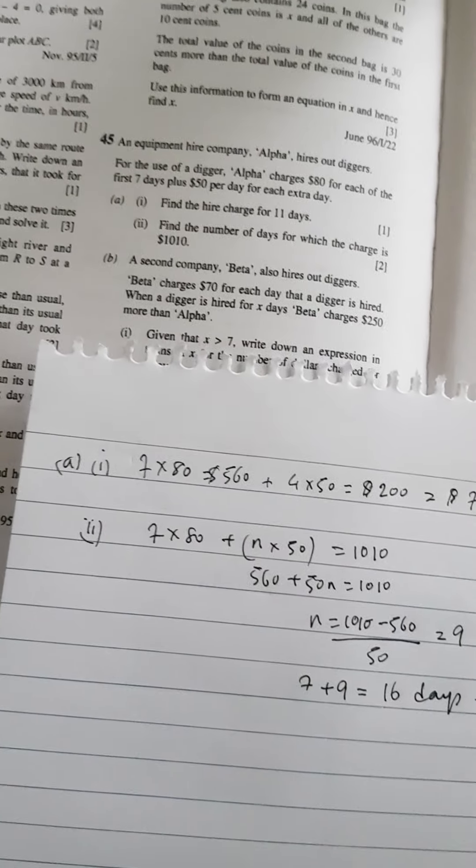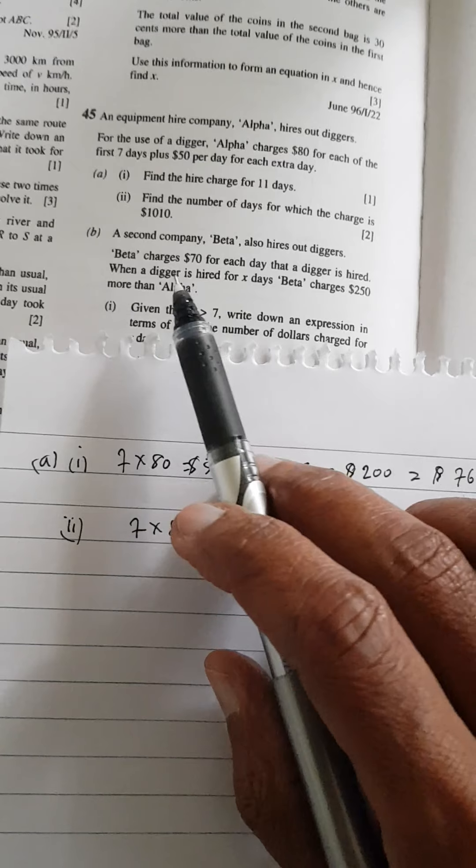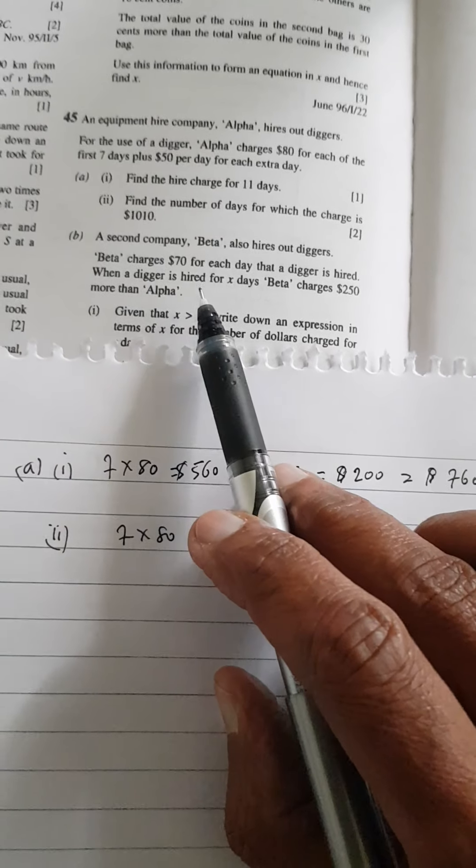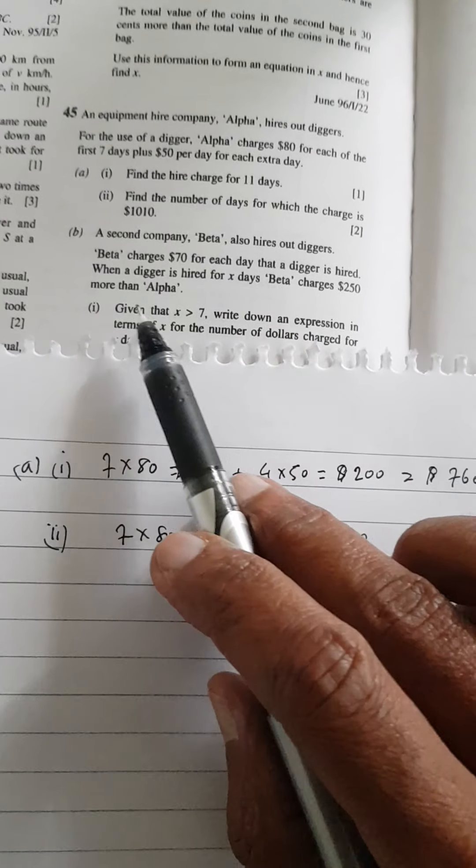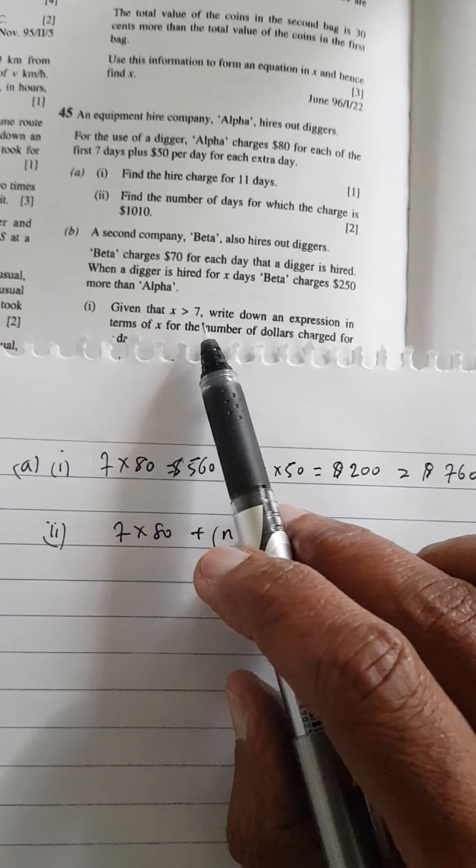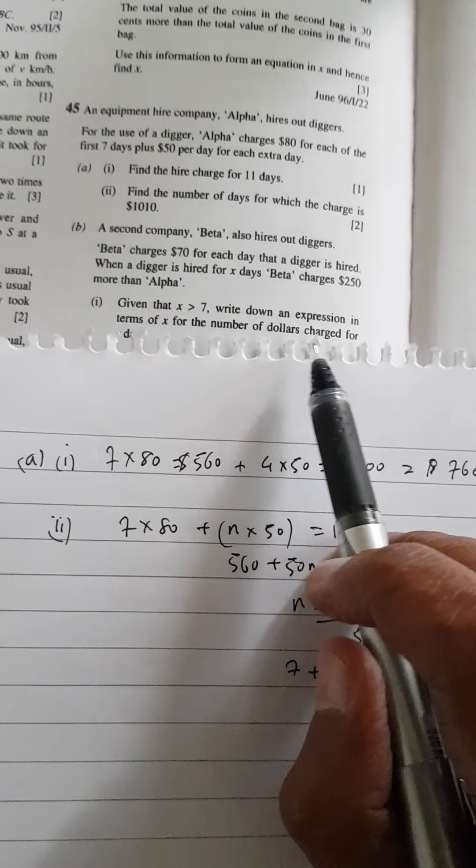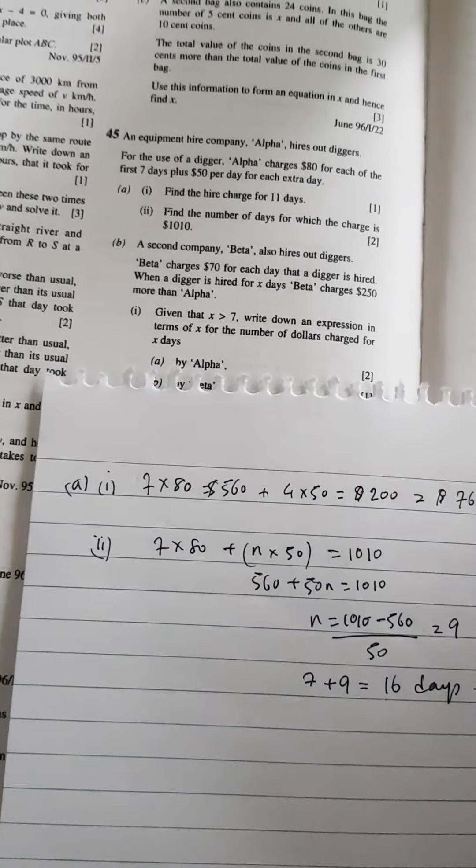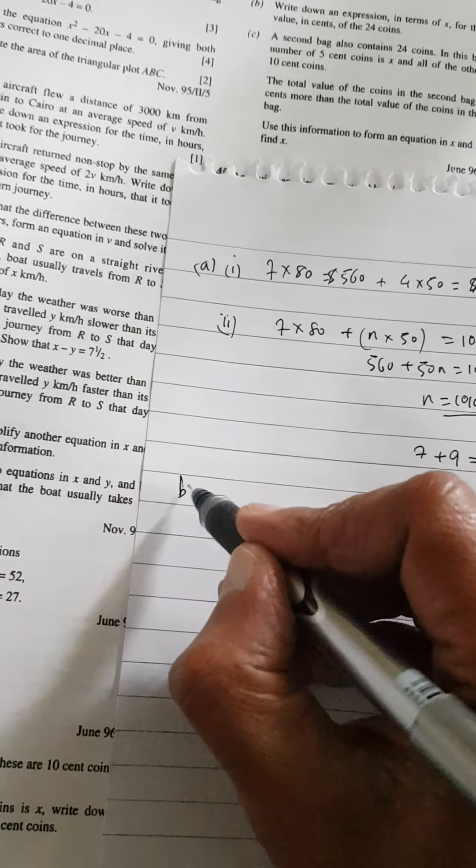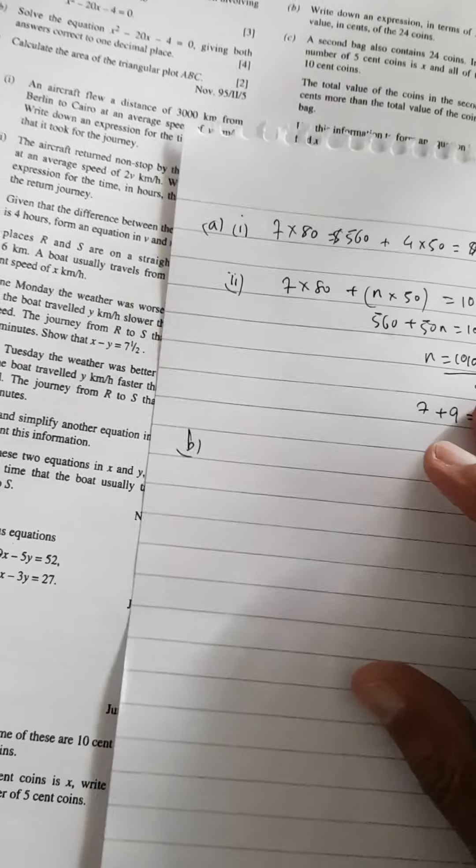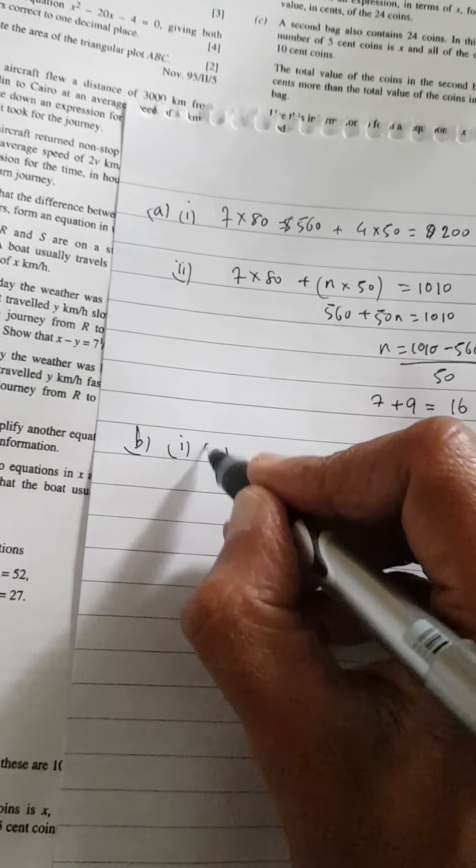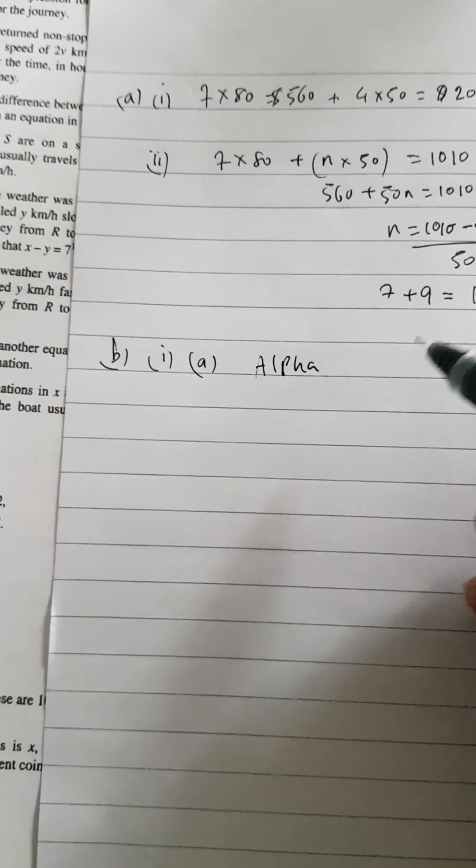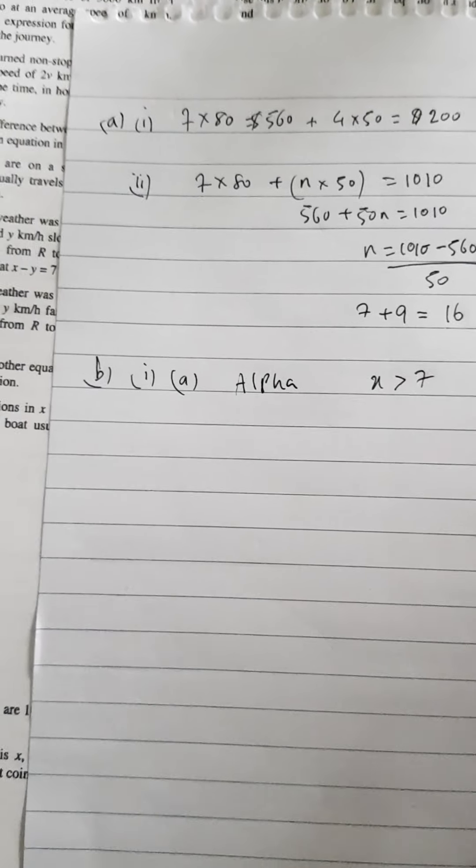In the second part of the question, there's another company called Beta. Beta also hires diggers. Beta charges $70 for each day that a digger is hired. When a digger is hired for X days, Beta charges $250 more than Alpha. Given that X is greater than 7, write down an expression in X for the number of dollars charged for X days by Alpha. So if we go back to Alpha, this is part B now.